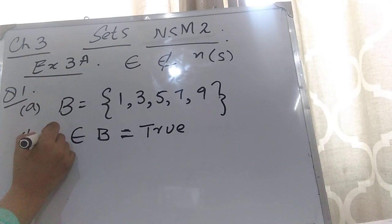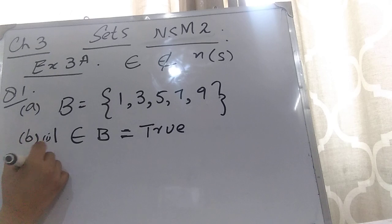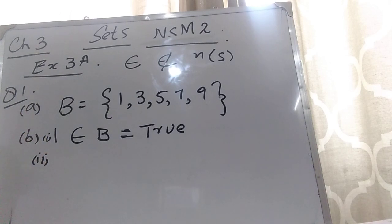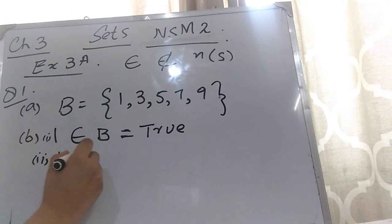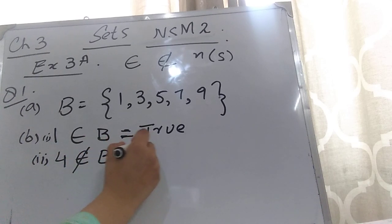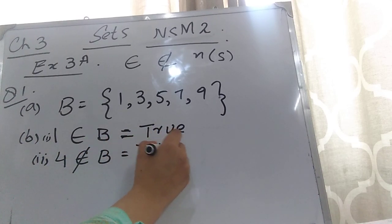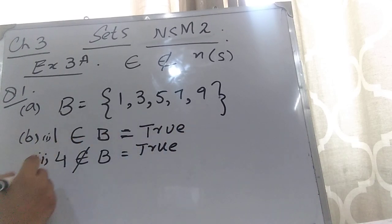Now part 2: they are saying that 4 is not an element of B. Here you can see that 4 is not present in set B. So we will say that this statement is also true — 4 is indeed not an element of B.